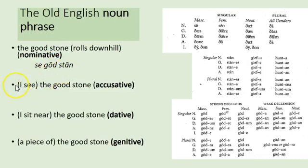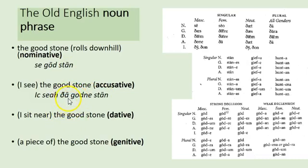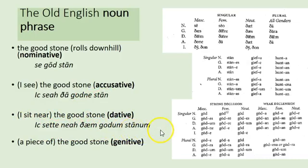For 'I see the good stone,' you would say 'ic sēo þone gōdne stān.' We can see that the accusative and nominative are the same in the noun but different in the adjective. The article 'the' is said differently depending on whether it's a subject or an object — 'se gōd stān' versus 'þone gōdne stān.' For 'I sit near the good stone,' a prepositional phrase taking the dative, you say 'ic site nēah þǣm gōdum stāne.' That '-um' ending is generally a dative ending in Old English.